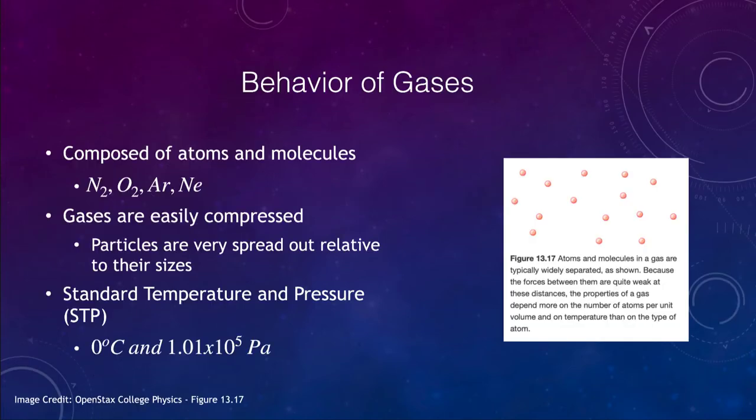First of all, what is a gas? Well, gases are composed of atoms or molecules. Some gases are composed of individual atoms such as argon, neon, or helium. Other gases are composed of molecules which are more than one atom bound together, like nitrogen and oxygen which make up the majority of our atmosphere. The oxygen we breathe is molecular oxygen with two oxygen atoms bound together.